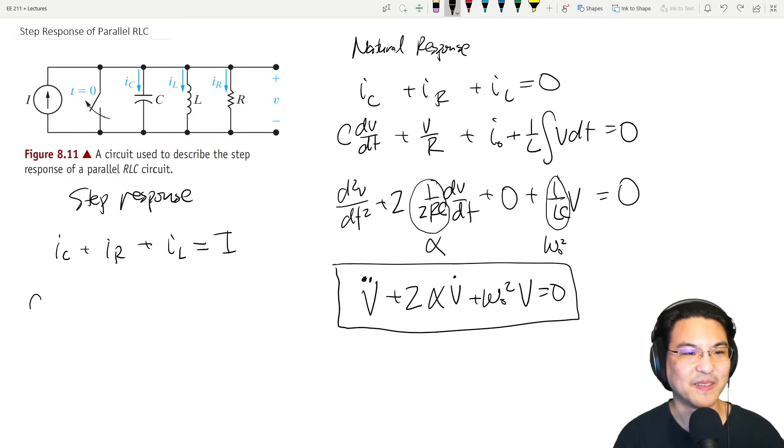For the capacitor, C dV/dt. For the resistor, V over R. For the inductor, I'm just going to leave it as is. For the inductor, voltage looks like this.